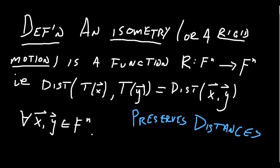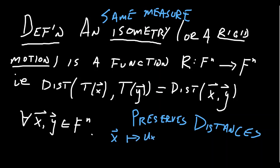The word isometry itself comes from the Greek; it would translate as 'same measure' or 'same distance.' That's exactly what an isometry does — it preserves the distances between vectors. If you take what we just talked about a moment ago, multiplication by orthogonal matrices preserves distances. So multiplication by an orthogonal matrix is an example of an isometry.